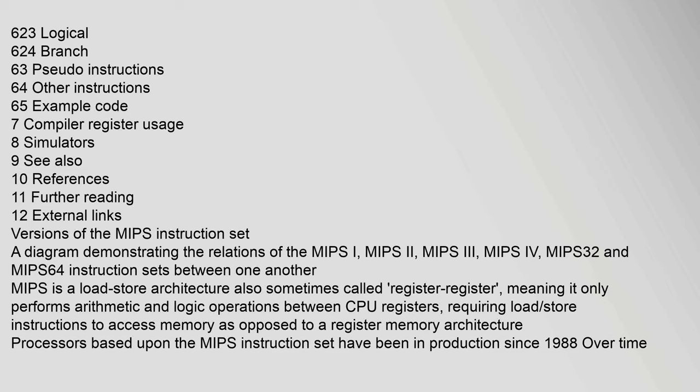A diagram demonstrates the relations of the MIPS-I, MIPS-II, MIPS-III, MIPS-IV, MIPS-32, and MIPS-64 instruction sets between one another. MIPS is a load-store architecture, also sometimes called Register-Register, meaning it only performs arithmetic and logic operations between CPU registers, requiring load-store instructions to access memory. Processors based upon the MIPS instruction set have been in production since 1988.